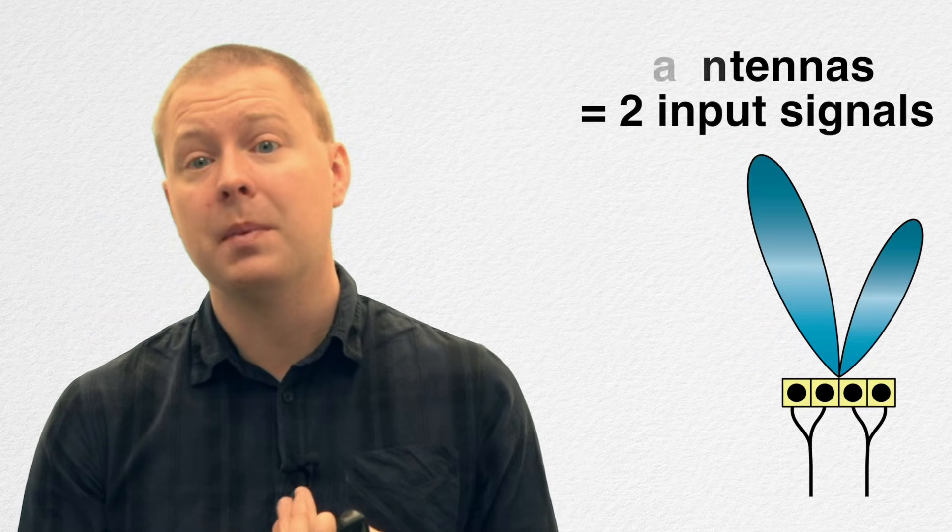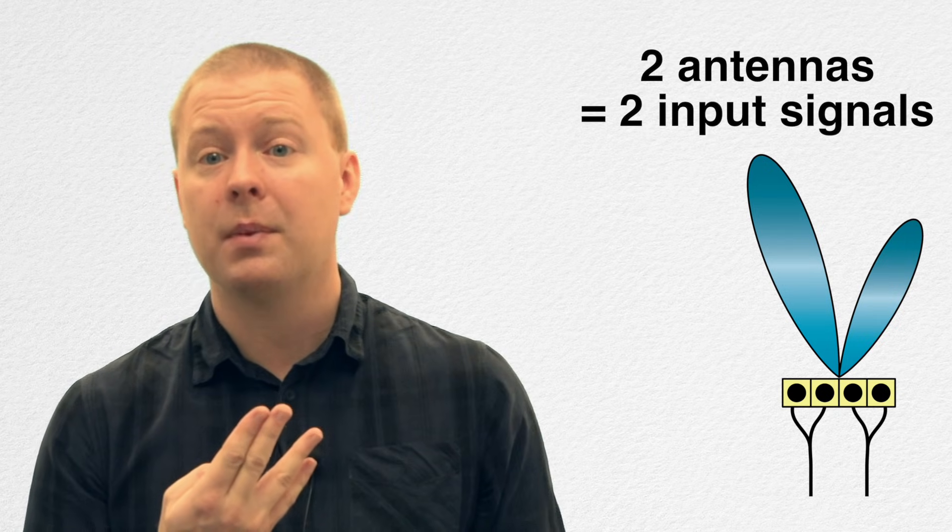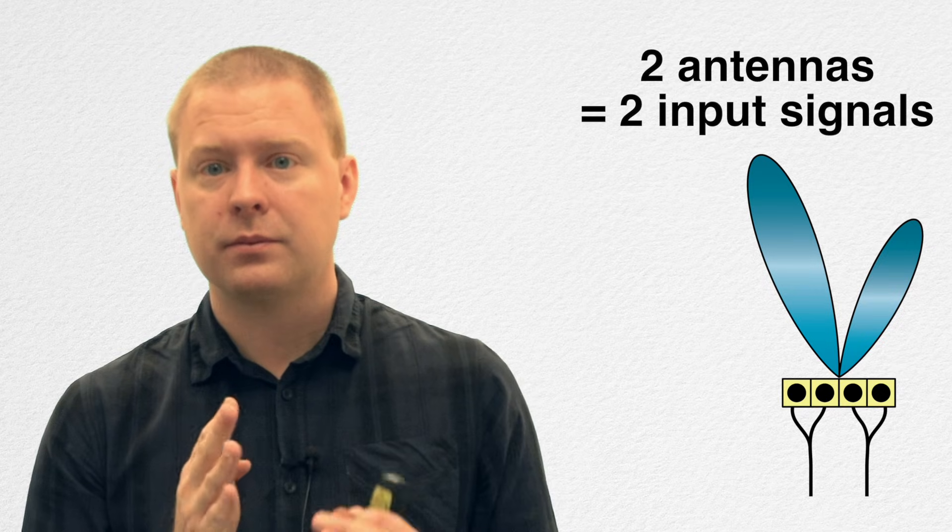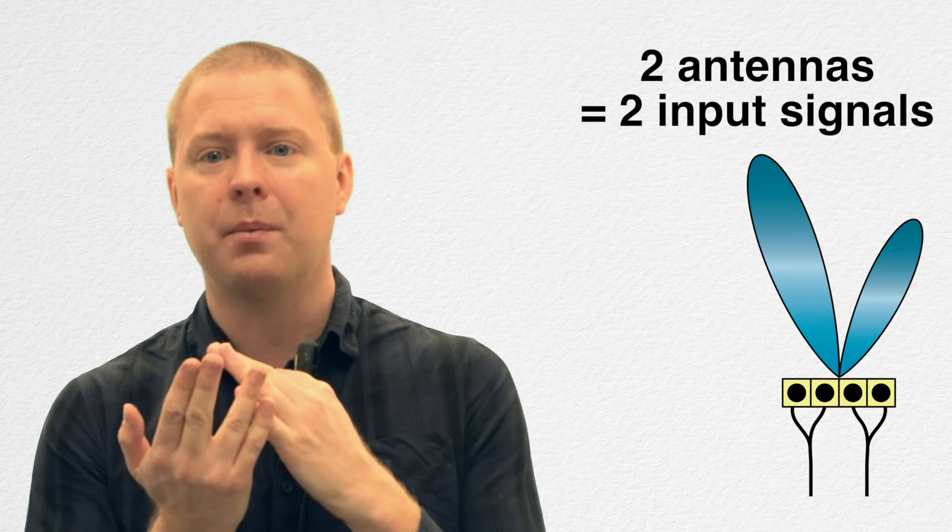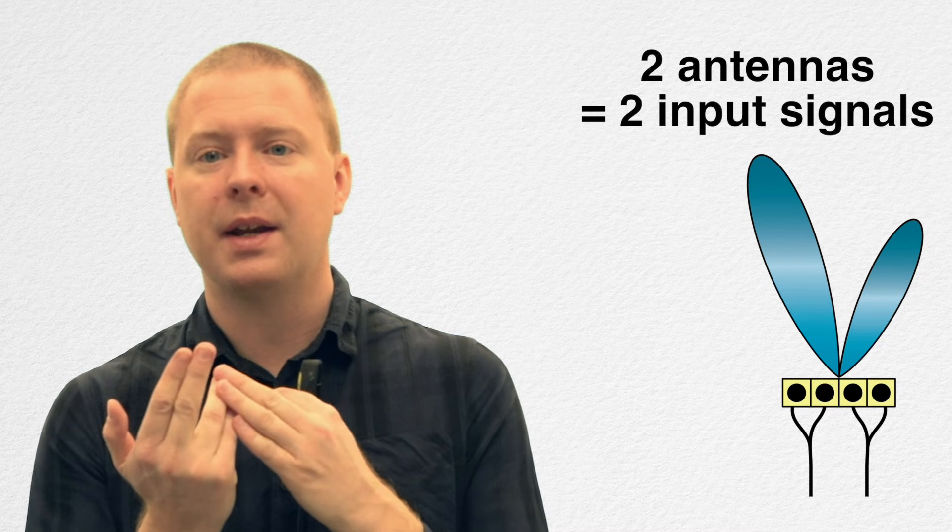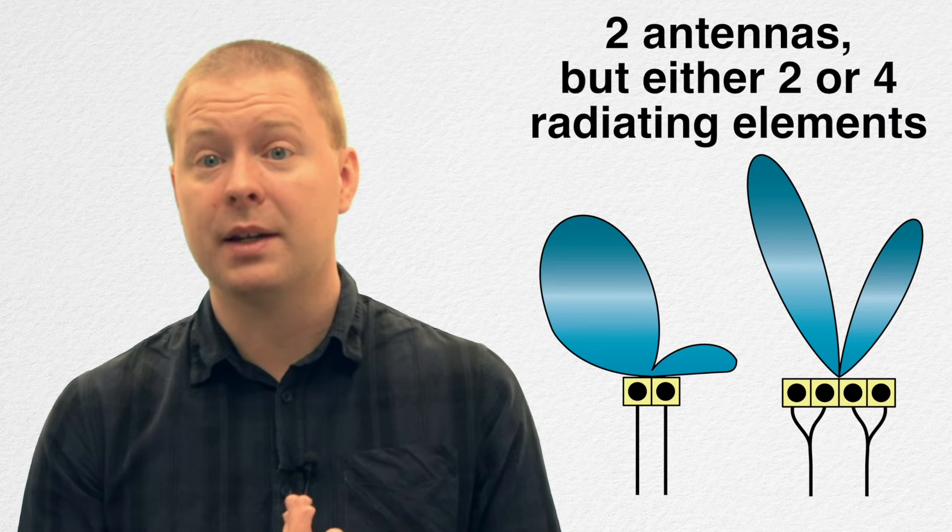You can do something in between, meaning that you take four radiating elements and map them two and two to become two different antennas. You feed each one of them with the same signal in one pair, but you are adjusting the phases between the first two and the second two. In that way, you can steer beams in different directions, but you will not have the same flexibility as before.